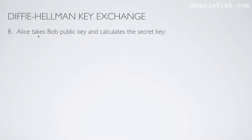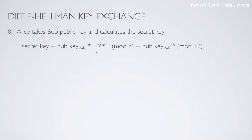Step 8. Alice takes Bob's public key and calculates the secret key with this equation. Here is Bob's public key, and this is Alice's private key as an exponent, and the secret key is calculated with this equation.